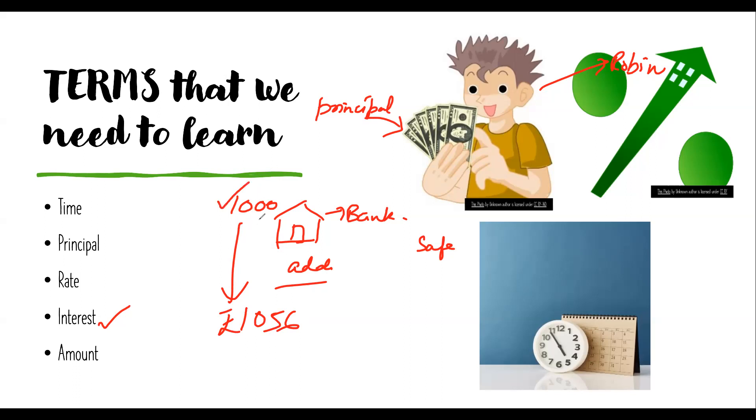So this 56 rupees additional that he got is actually the interest. When we deposit money in the bank, borrow from someone, or lend money, the extra return we get is called interest. So principle we have understood, time we understood as one year. Now the total money that Robin is getting is actually his principle, that was 1,000 rupees, plus interest of 56 rupees. So the total money we get back is actually called the amount.